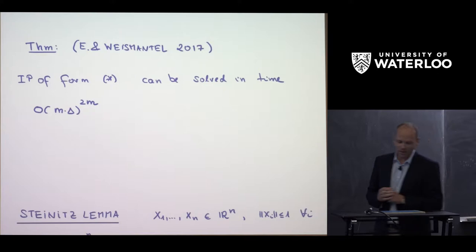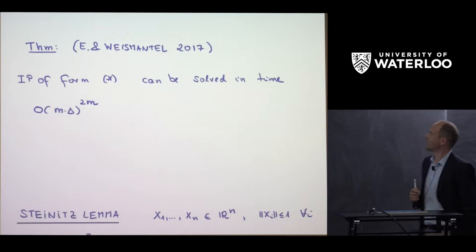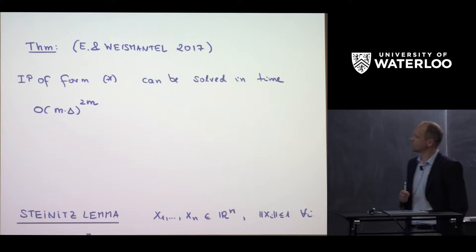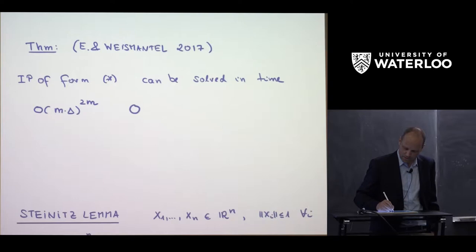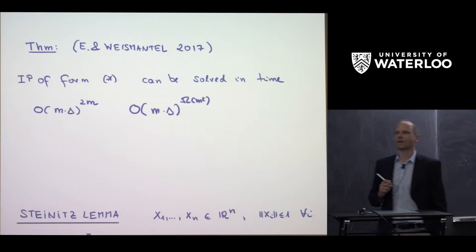Our first result: an IP in standard form — maximize c^T x, Ax = b, x ∈ Z_≥0^n — can be solved in time O(m · delta^{2m}), whereas the long-standing best bound by Papadimitriou was O(m · (delta^{omega(m²)})).